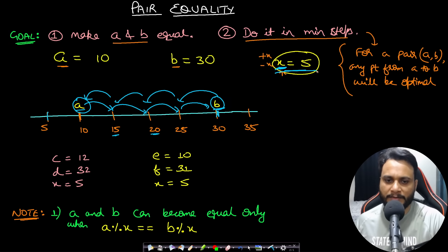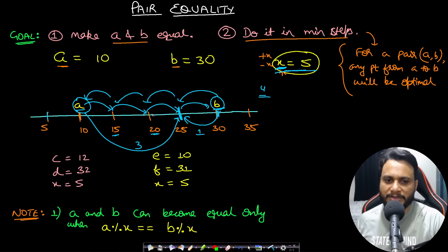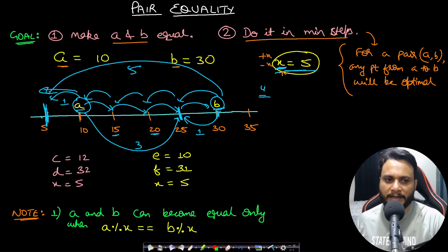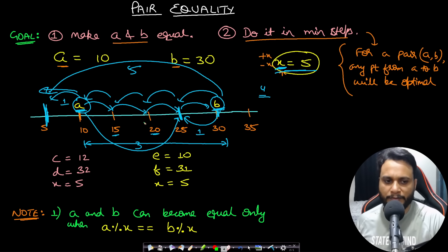Why do we meet between A and B rather than at some point in the middle? Even if you pick twenty-five as the meeting point, A takes three steps and B takes one step — the total is still four. Meeting outside the range is wasteful: if you pick five as the meeting point, A takes one step but B takes five steps, which is worse. So the optimal meeting point lies anywhere between A and B.